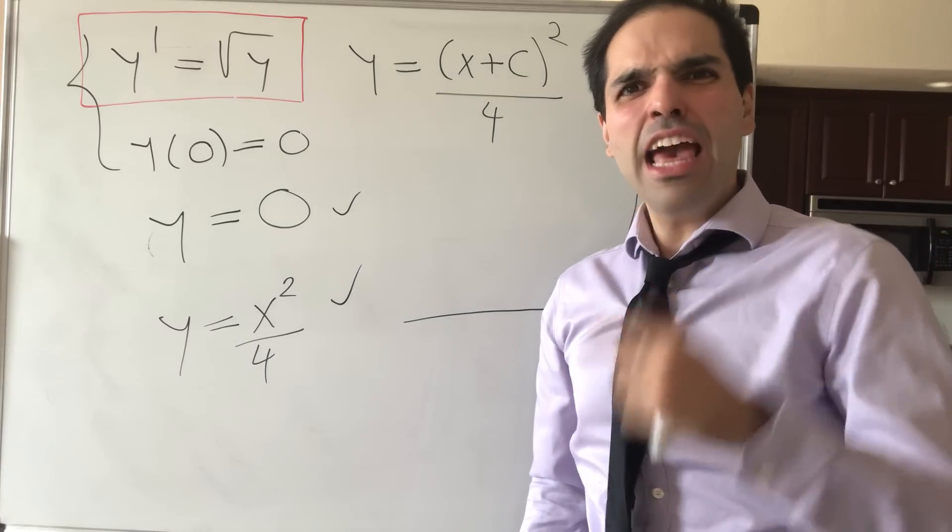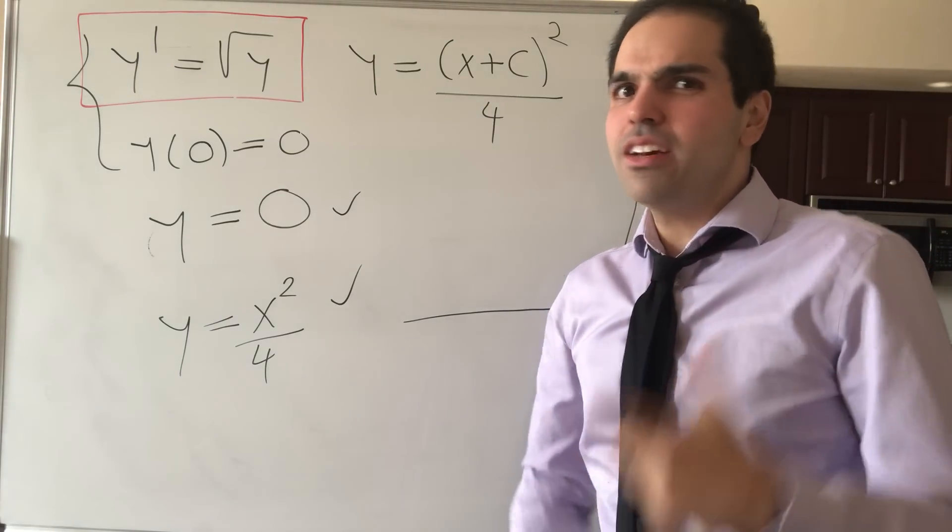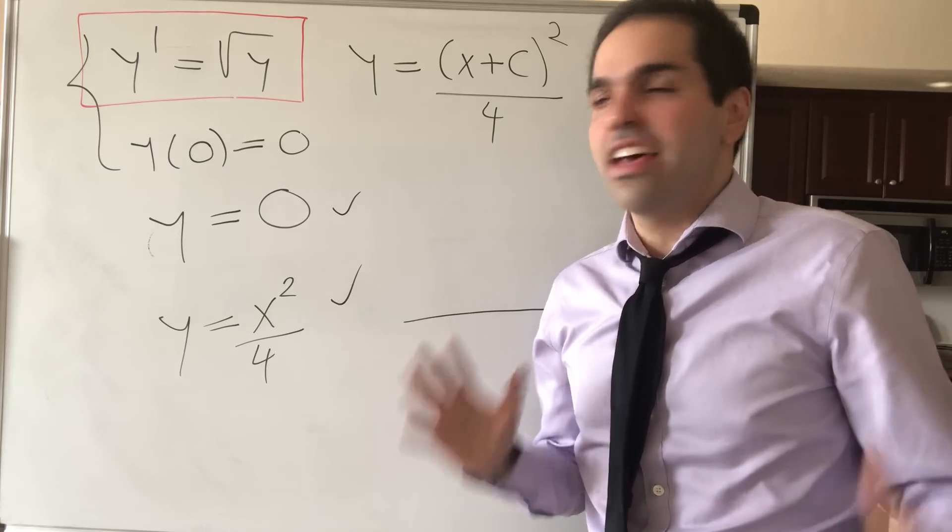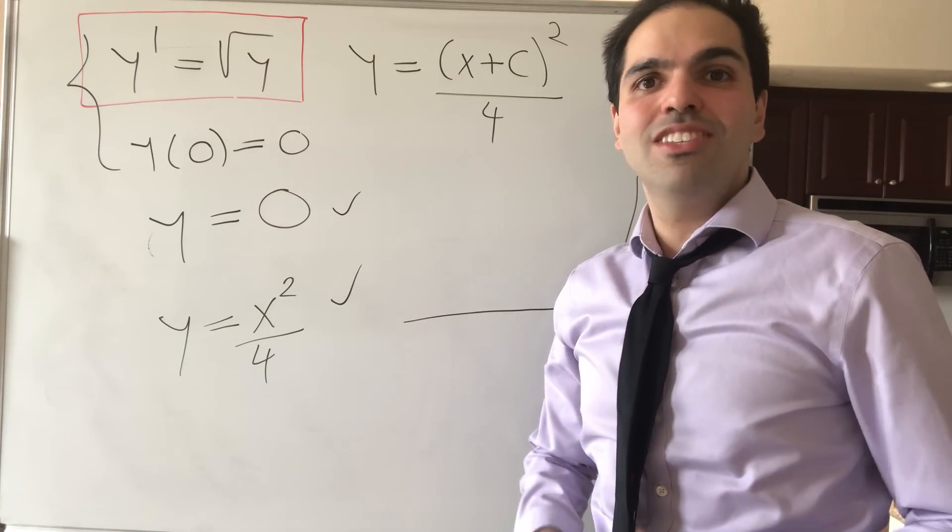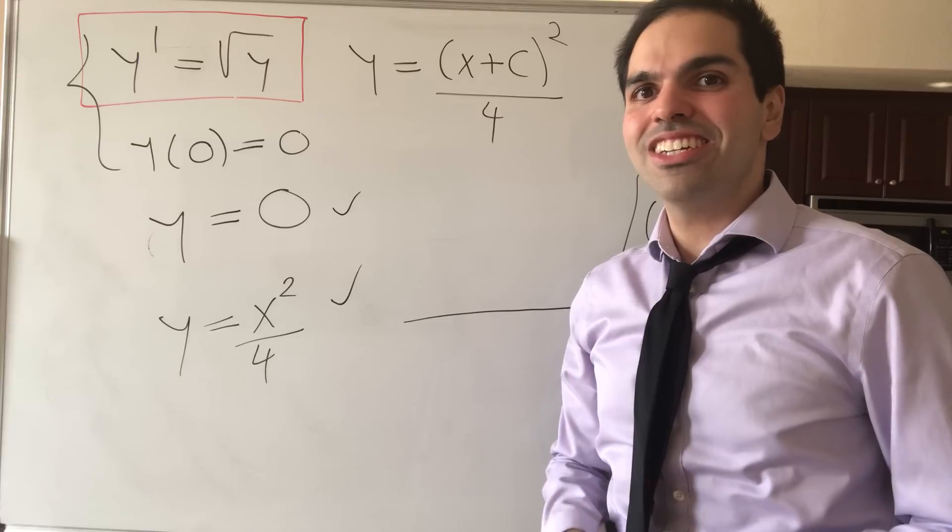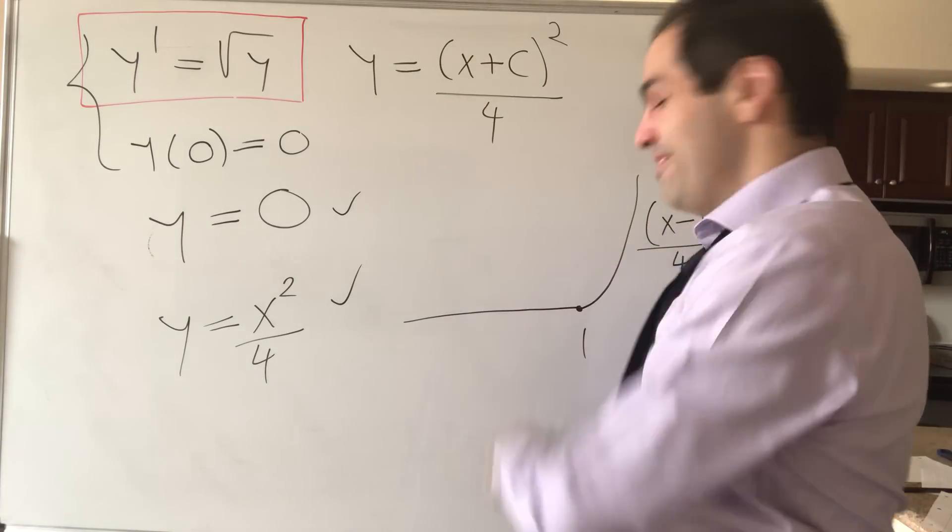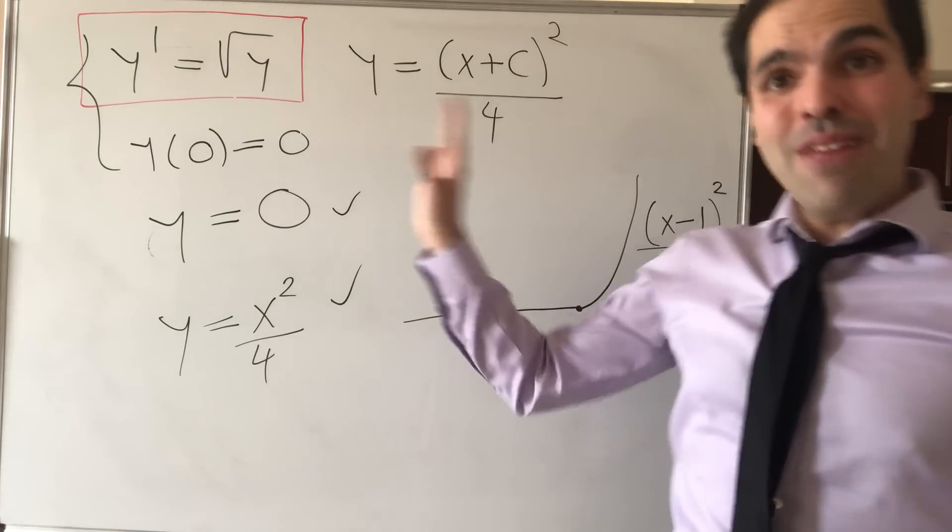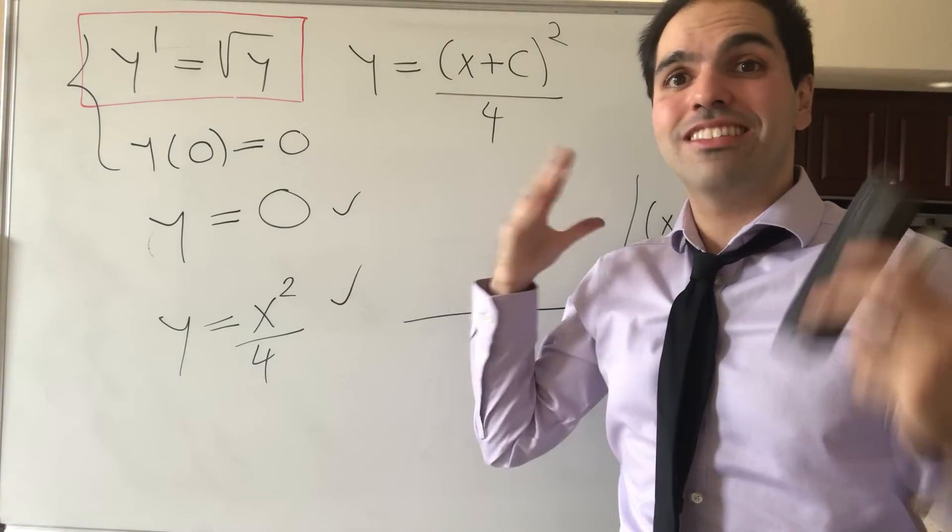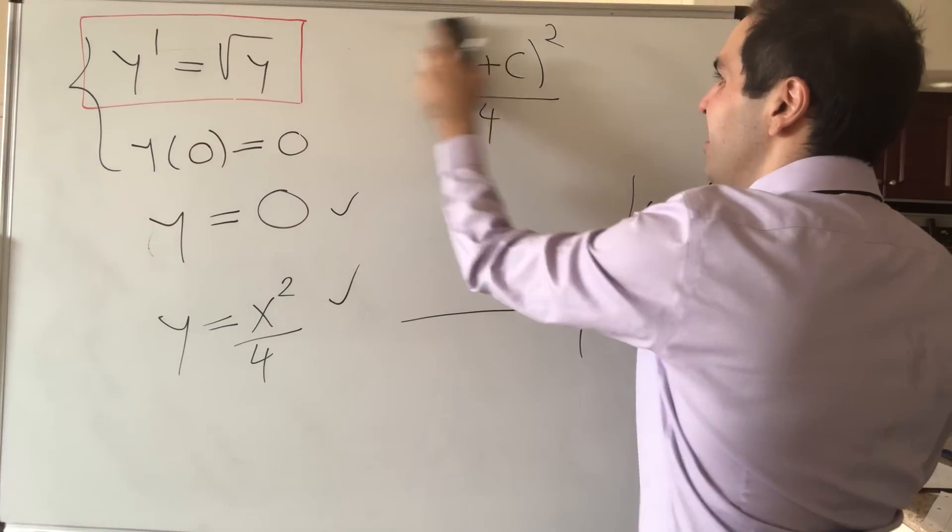But then you might be like, Pi m, isn't that weird? Because isn't there a theorem that says differential equations with initial conditions have a unique solution? Well, yes, but no, because, remember, this theorem has assumptions. And it turns out one of those assumptions fails. And let me explain you what went wrong here.